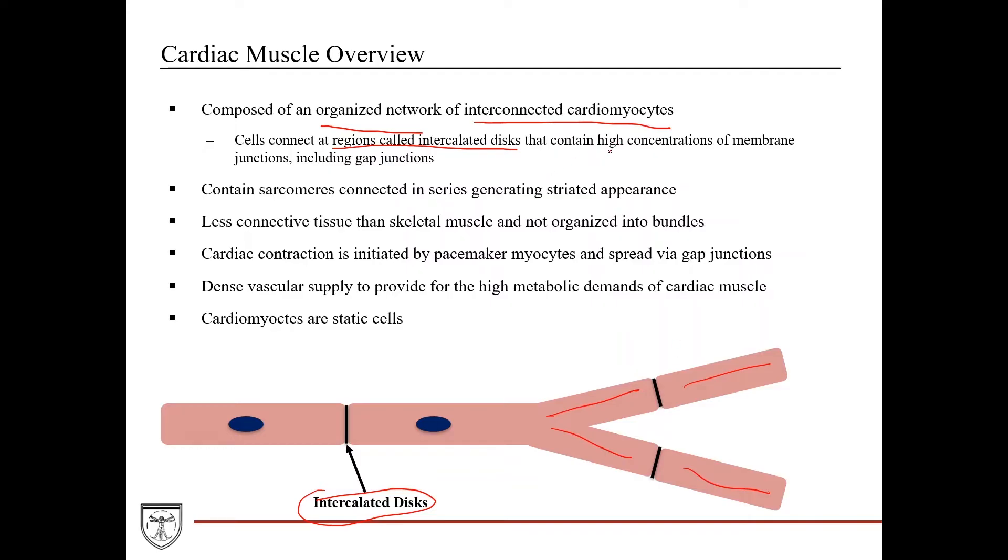These intercalated discs, as we'll talk about a little bit later, contain high concentrations of membrane junctions, including gap junctions, which help transmit electrical signals or action potentials between cardiomyocytes to carry out cardiac contraction. Cardiomyocytes contain sarcomeres, just like skeletal muscle cells do, and they're connected in series generating that striated appearance that you also will see in cardiac muscle.